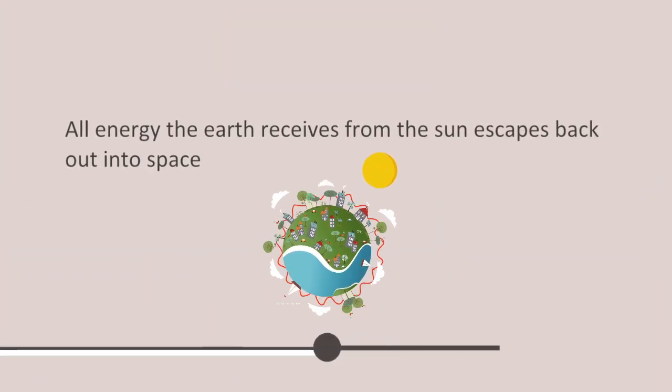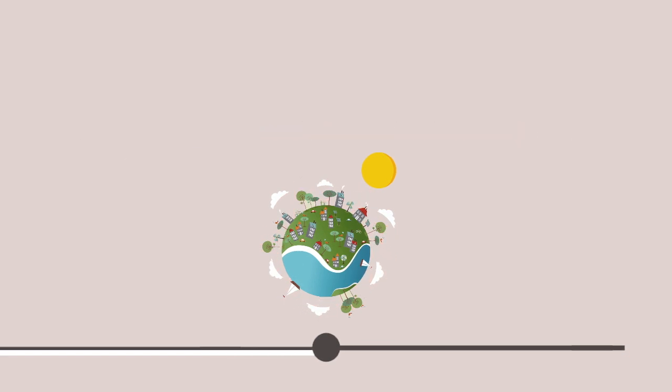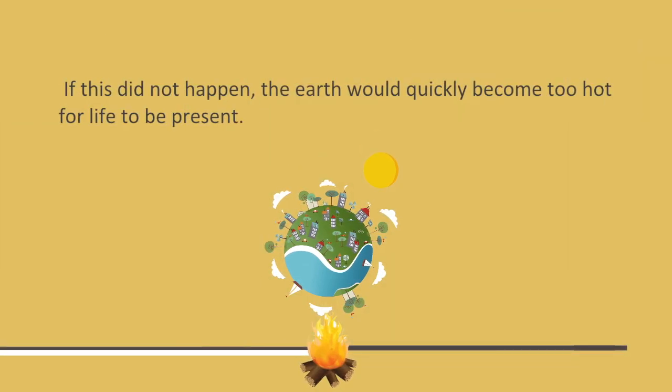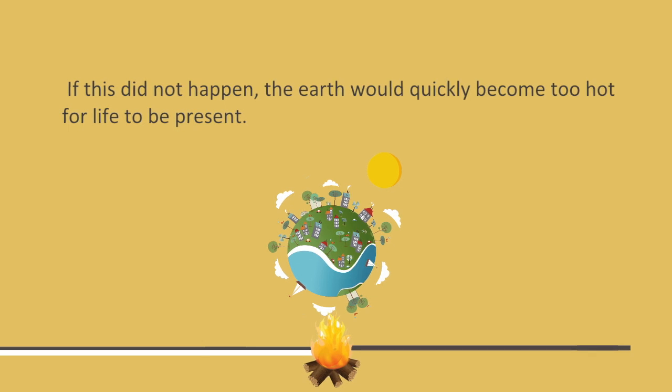Eventually, all energy the earth receives from the sun escapes back out into space. If this did not happen, the earth would quickly become too hot for life to be present.